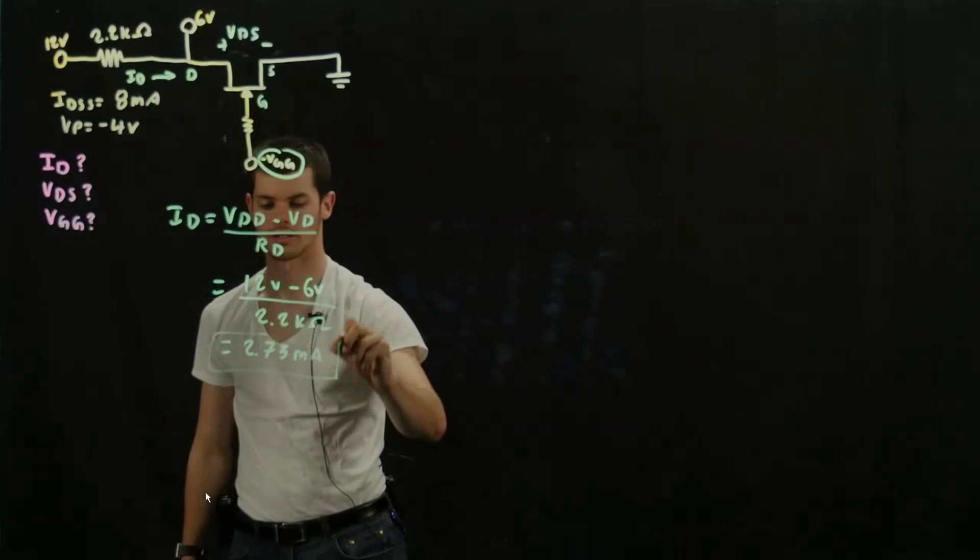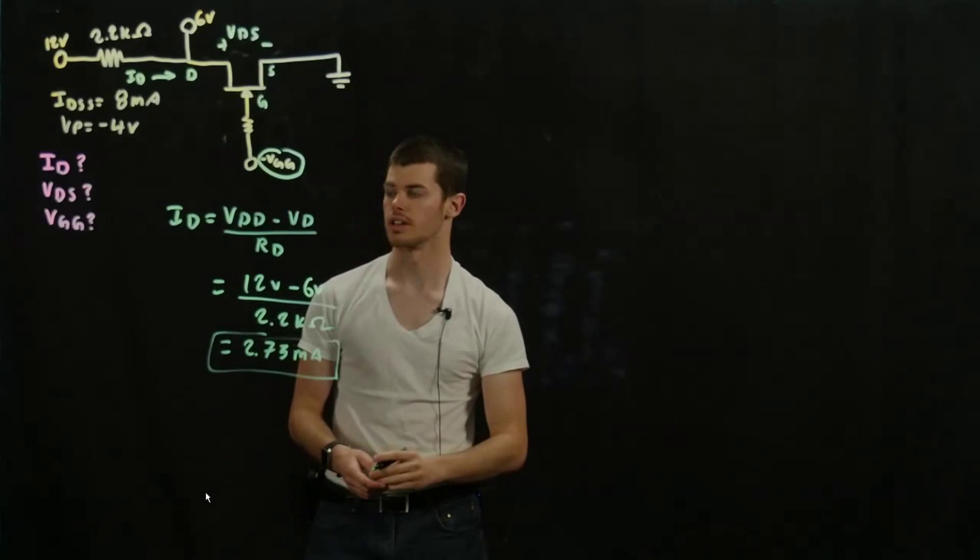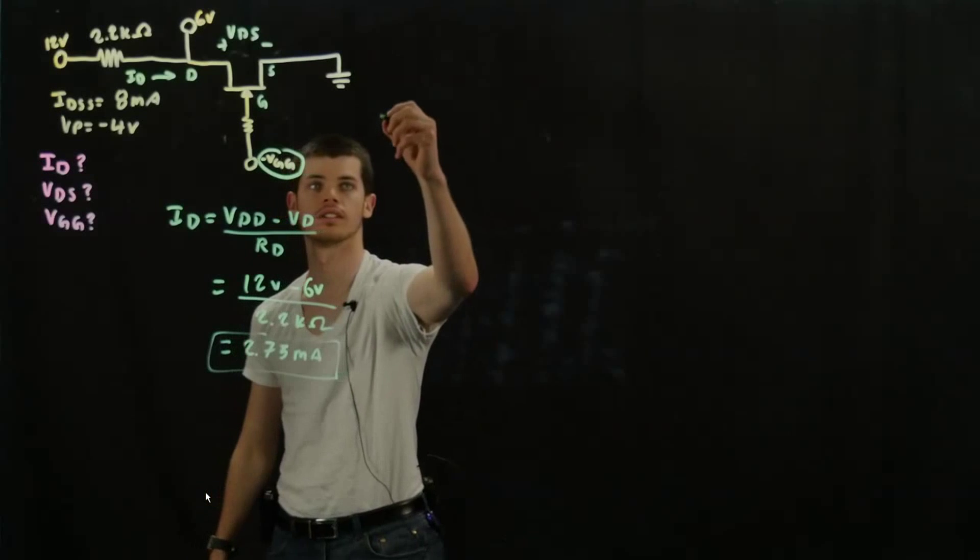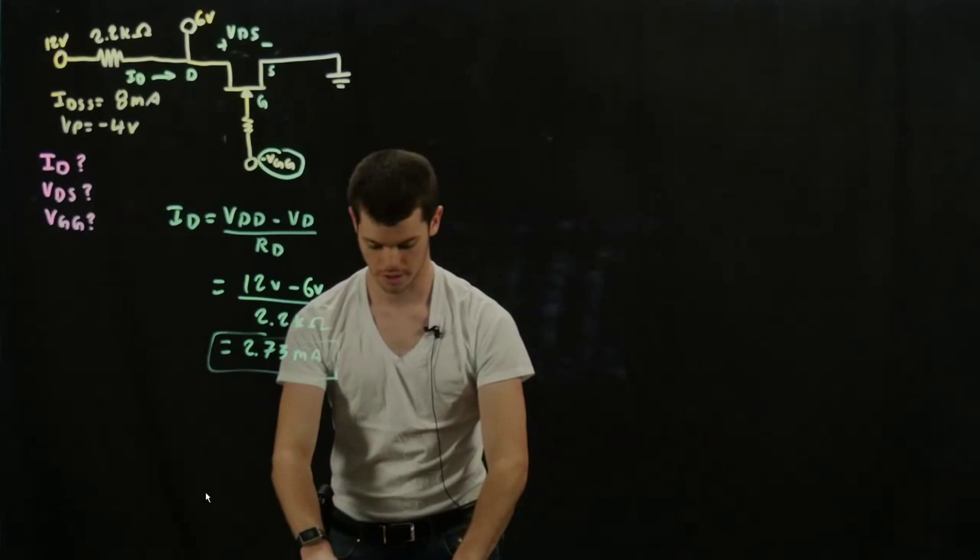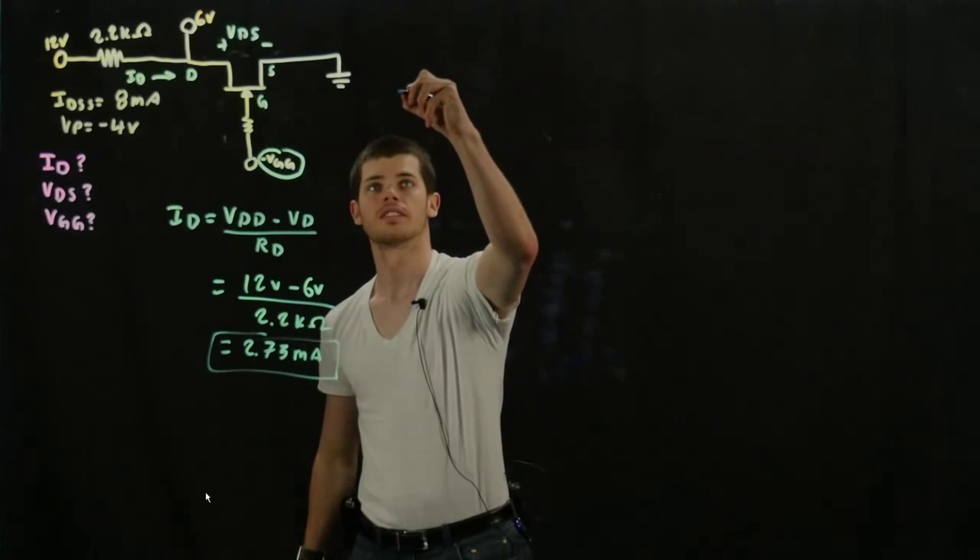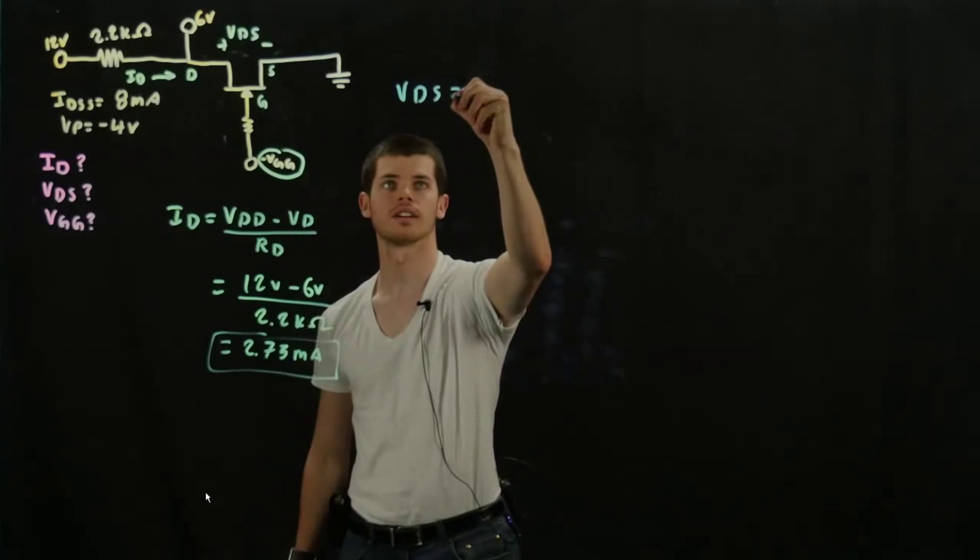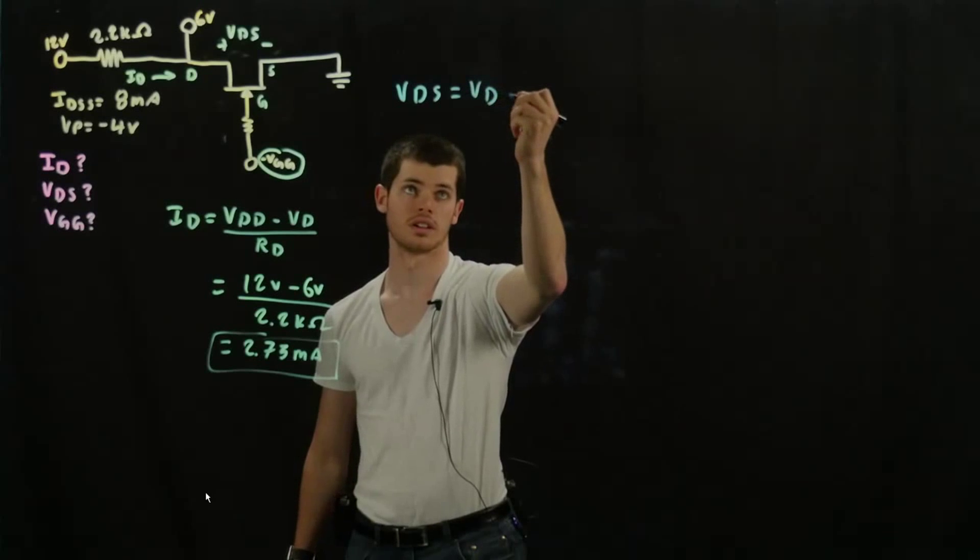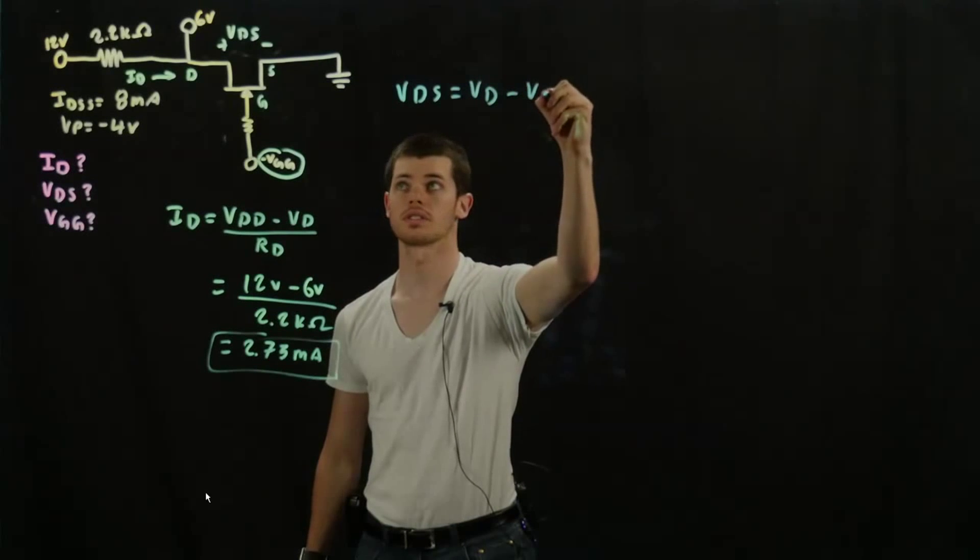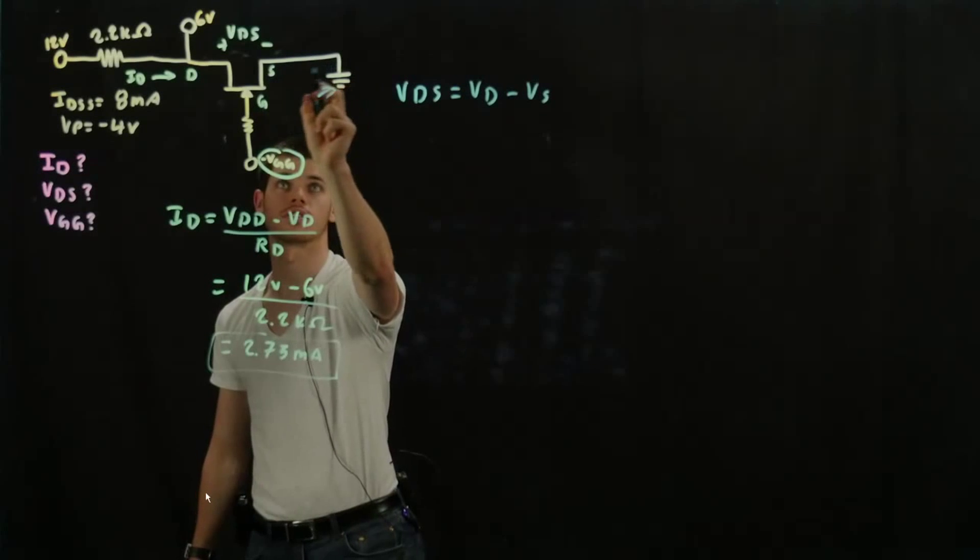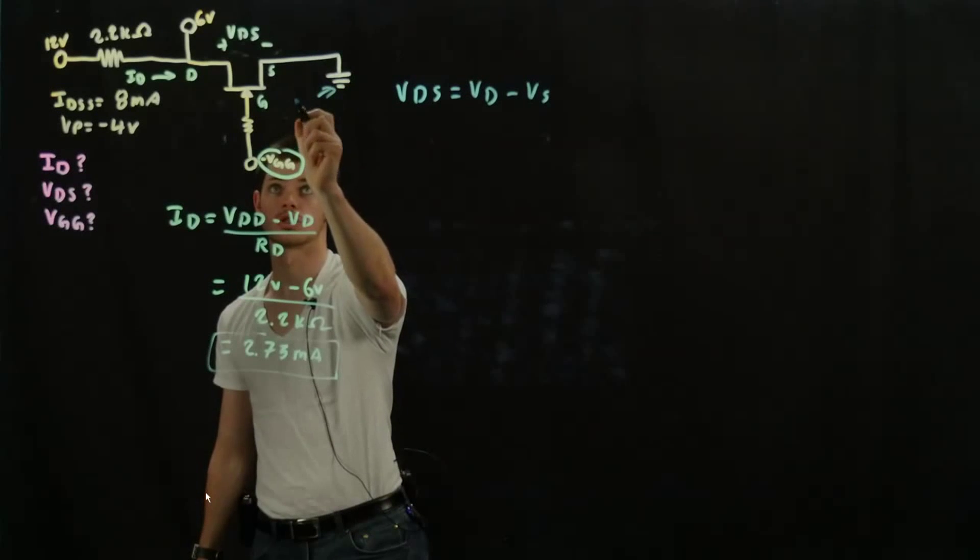Okay, that's our first value. Now what we're going to want to do is find VDS. To find VDS, we're going to want to find the difference between voltage of the drain minus the voltage of the source. Well, we can go ahead and look here and see this is grounded. There's no components. So therefore, S has got to be zero, Vs.